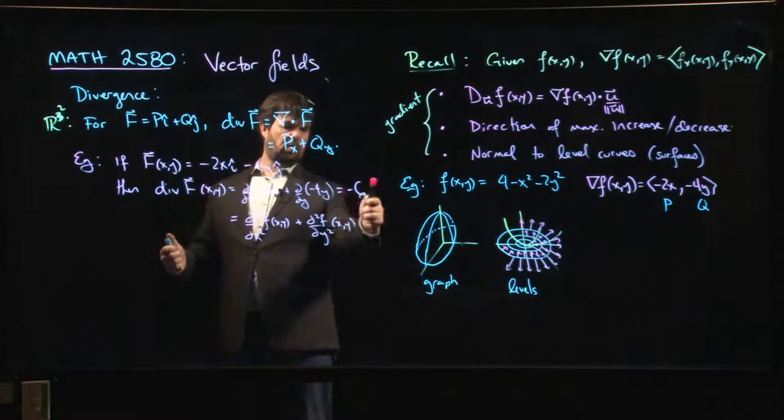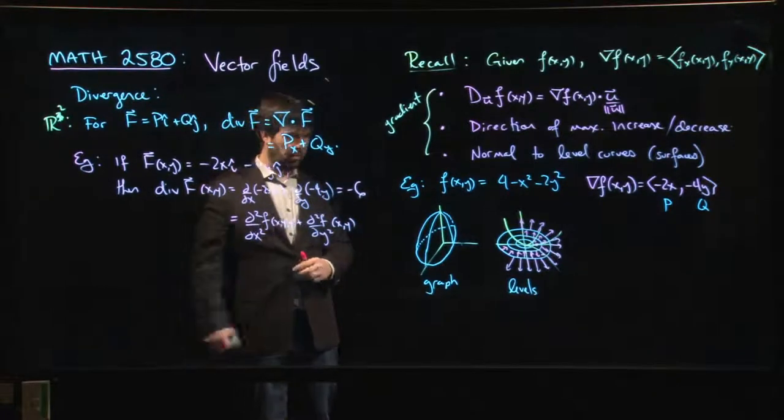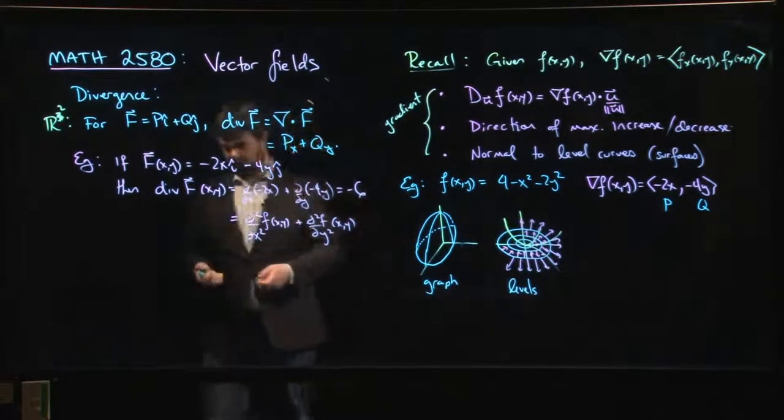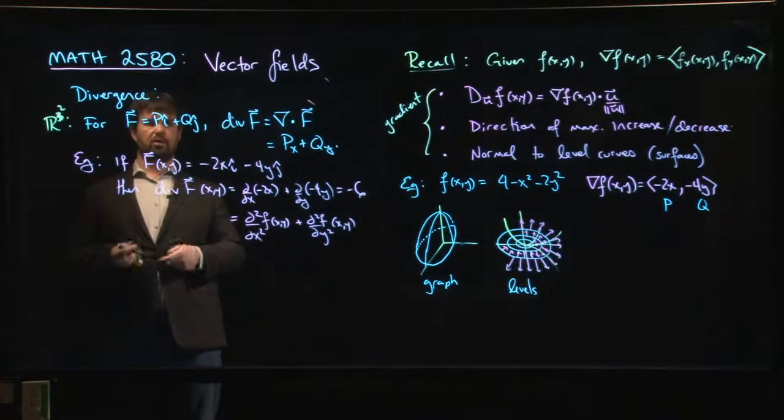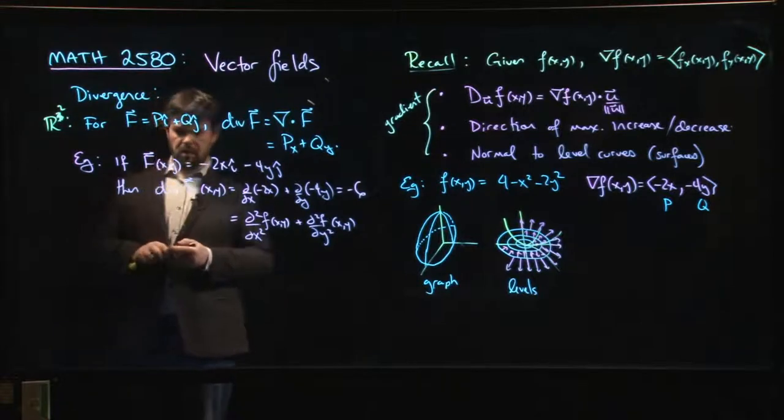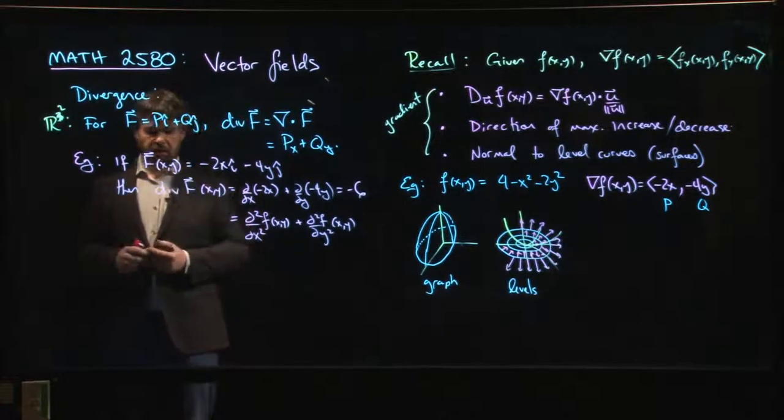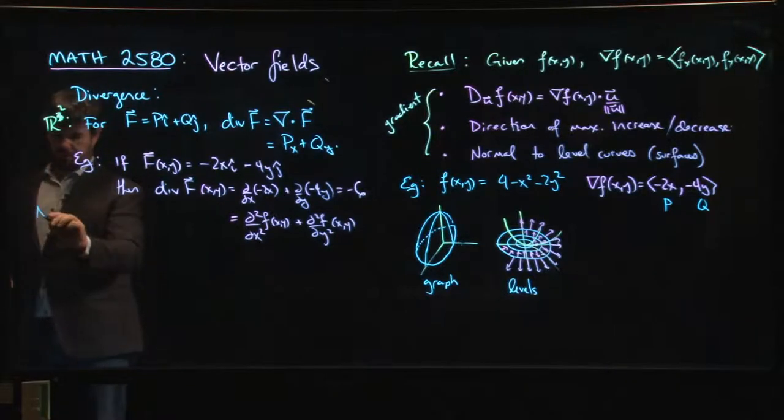And so that's why we're seeing this minus six. This is telling us that everything's trying to move into the middle. So this is giving you this idea. One of the terminology that you would use is that if the divergence is identically zero, then you're dealing with a vector field that's called incompressible.